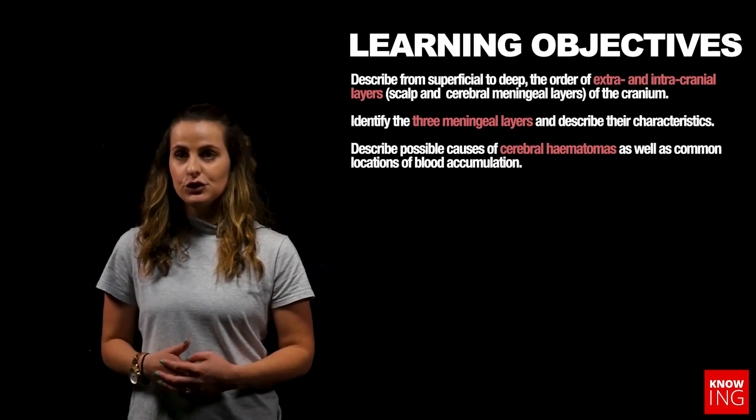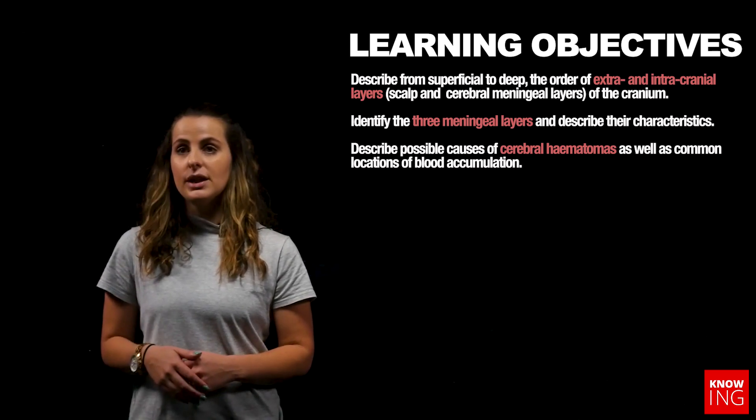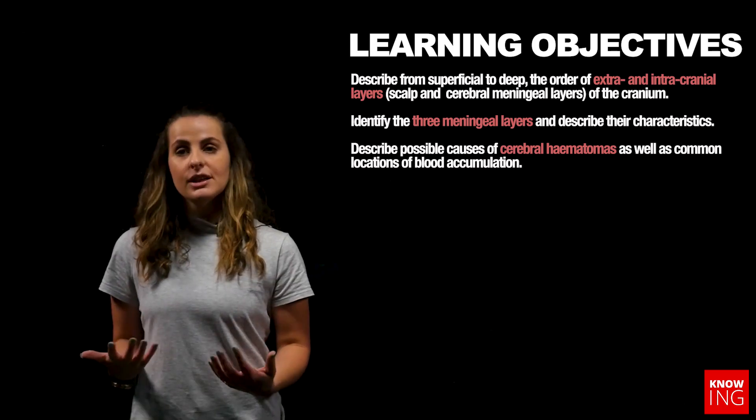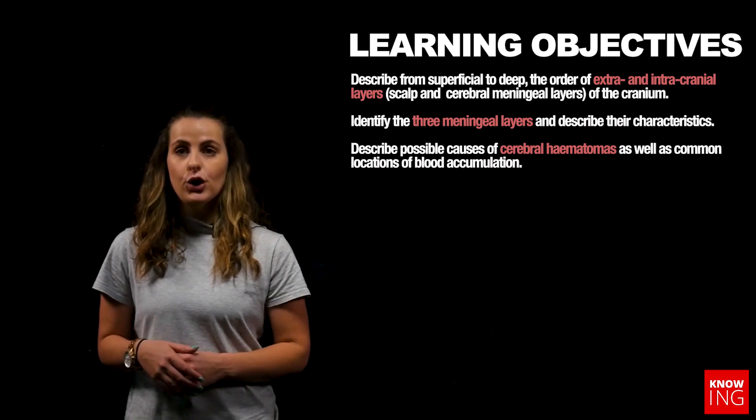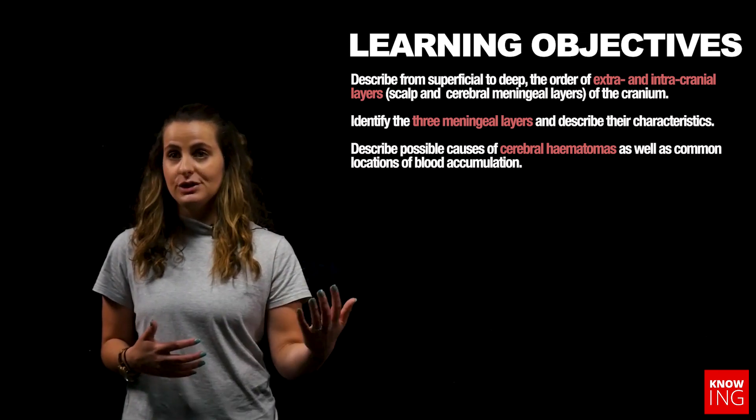The key to understanding the location and appearance of extracranial versus intracranial collections — namely hemorrhaging in the case of traumatic brain injury — is to gain an understanding of meningeal anatomy and the layers in which blood can accumulate. The learning objectives for this lightboard video are to understand and describe the anatomy corresponding to the layers of the skull as well as the cerebral meningeal layers. The best way to solidify this knowledge is to draw out the layers from superficial to deep systematically.